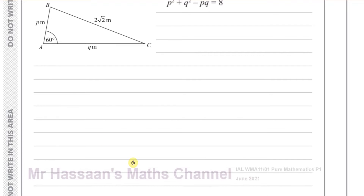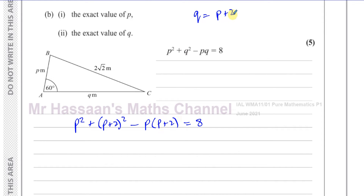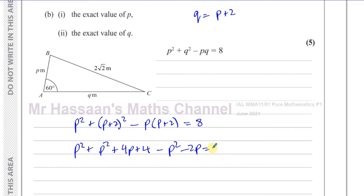So I'm going to take Q as P plus 2. Instead of Q, I put P plus 2, giving: P squared plus (P plus 2) squared minus P times (P plus 2) equals 8. Expanding the perfect square gives P squared plus 4P plus 4. Distributing the last term gives minus P squared minus 2P, all equal to 8.